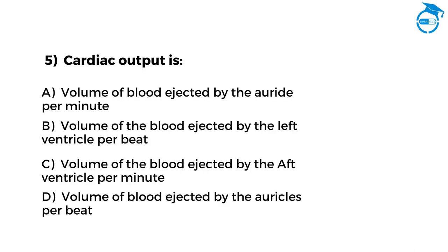Cardiac output is: Option A: volume of blood ejected by the right ventricle per minute. Option B: volume of blood ejected by the left ventricle per beat. Option C: volume of blood ejected by the left ventricle per minute. Option D: volume of blood ejected by the aorta per beat.